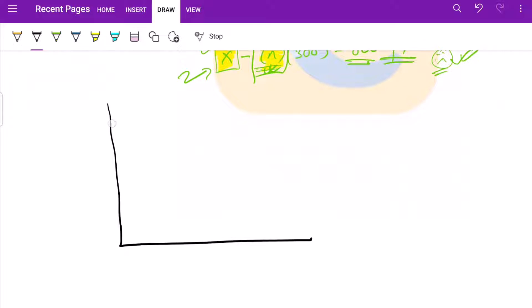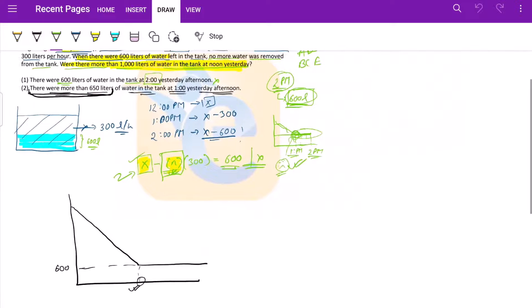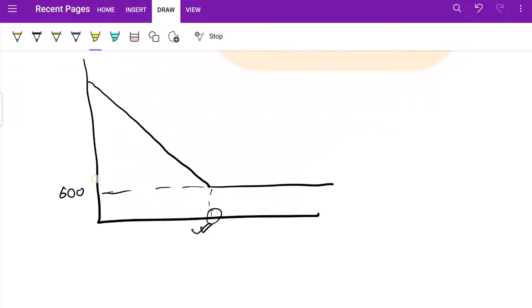What they're effectively saying is the water kept on decreasing till a point when it reached 600, this is the 600 level, and at that point it ceased. Now we need to understand what was the time when it is 600. What they're effectively saying in this statement is more than 650 liters of water at 1.